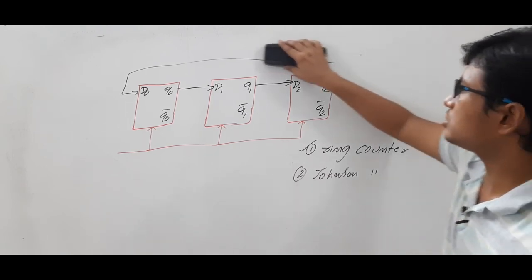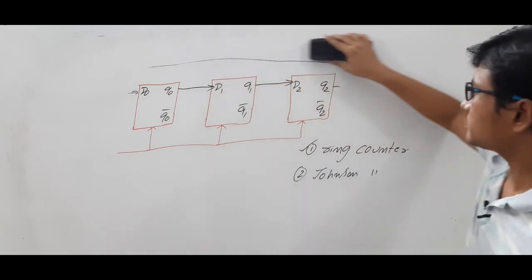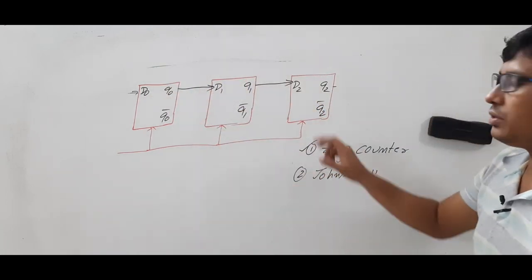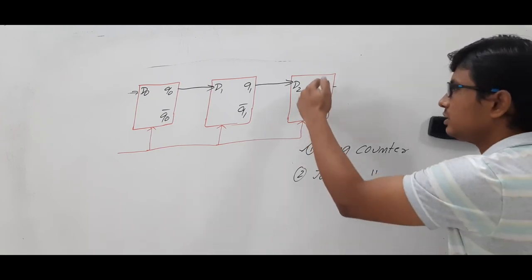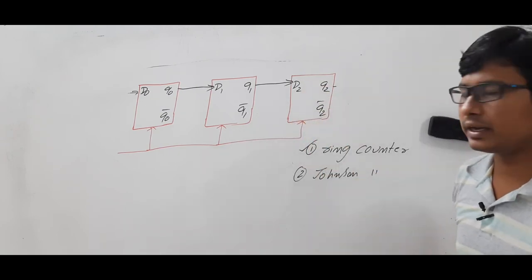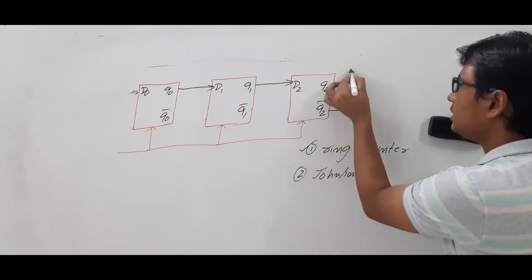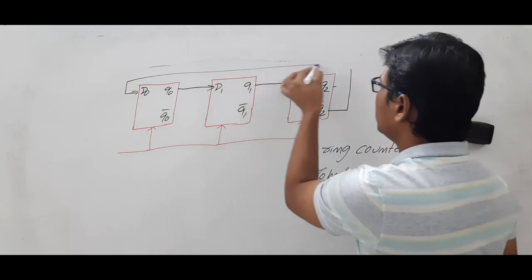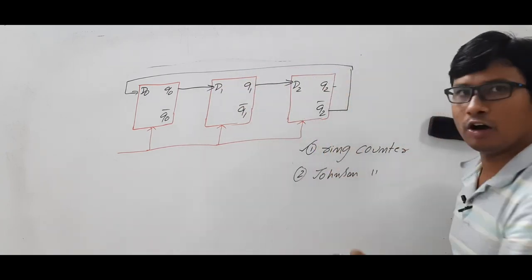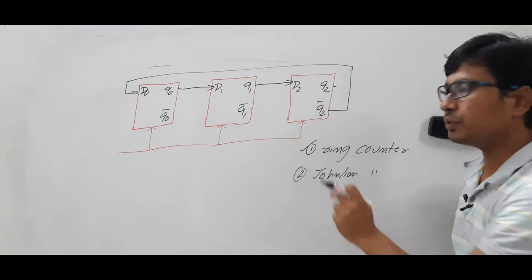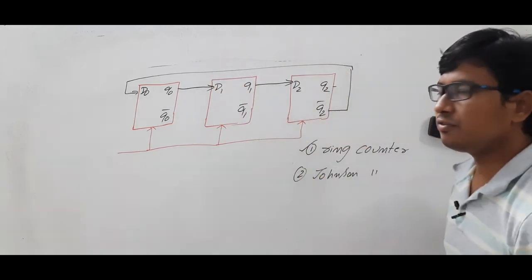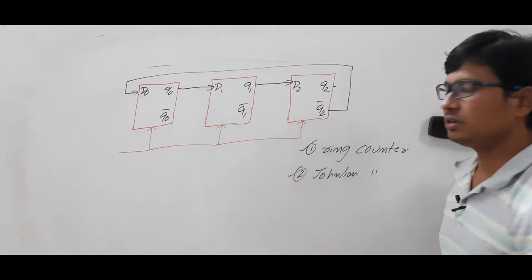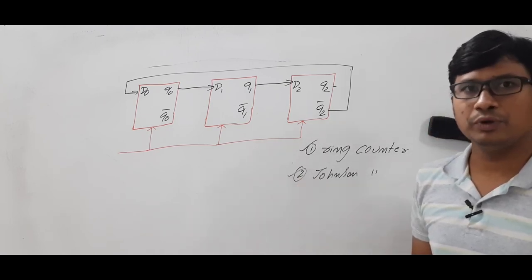Now, what is a Johnson counter? Instead of feeding Q2 directly, we take Q2 complement — whatever Q2 gives, it gives the complement. If we give this Q2 complement as input to D0 — meaning the last flip-flop's complement output is given to the first flip-flop as input — then we call it a Johnson counter.